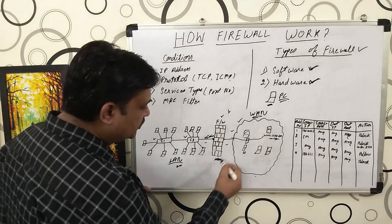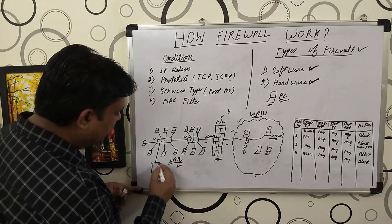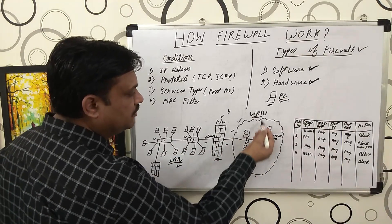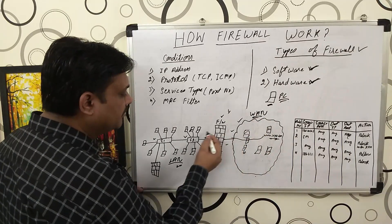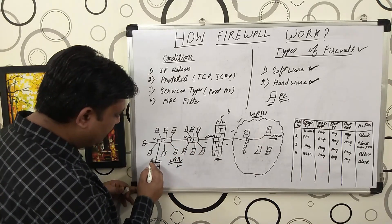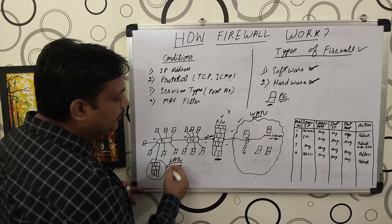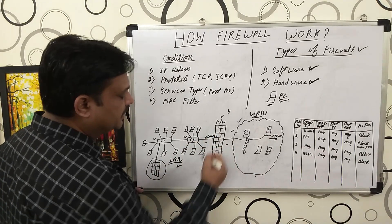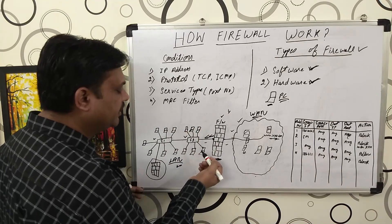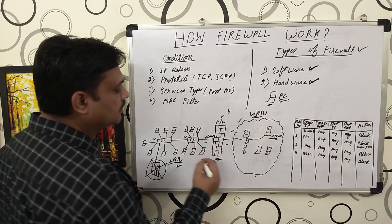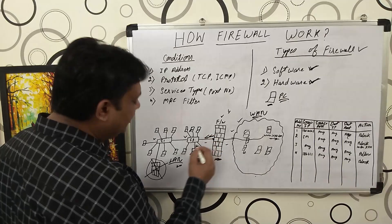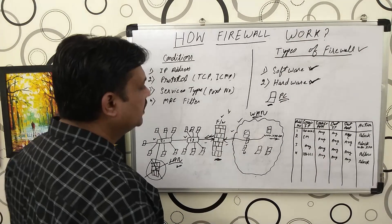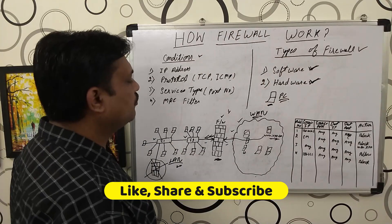The location of the firewall is always between the local area network and the wide area network. You cannot place the firewall inside the LAN, because data coming from the WAN would then terminate directly to your switch — meaning the firewall would not be able to inspect those packets to determine whether they should be allowed into the network. The right location is where the LAN connects to the WAN.